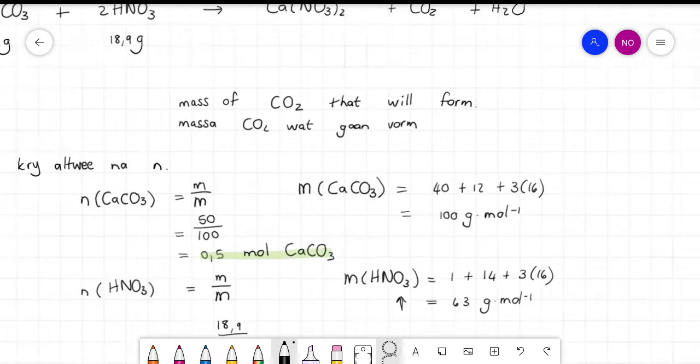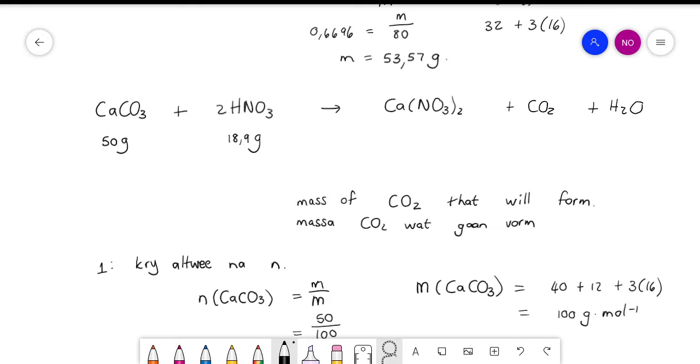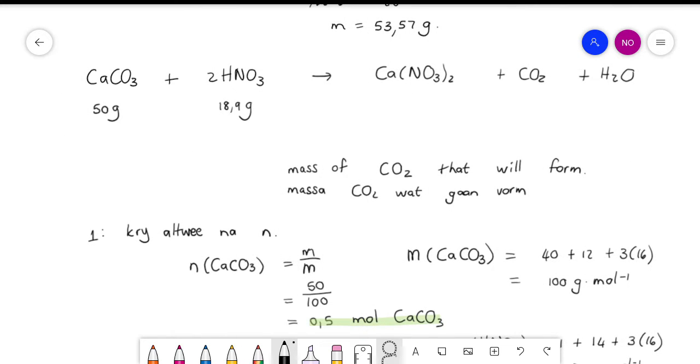So, I told you that you have 50 grams of calcium carbonate and 18.9 grams of sulfuric acid. And then I ask you for the mass of the carbon dioxide that will form.